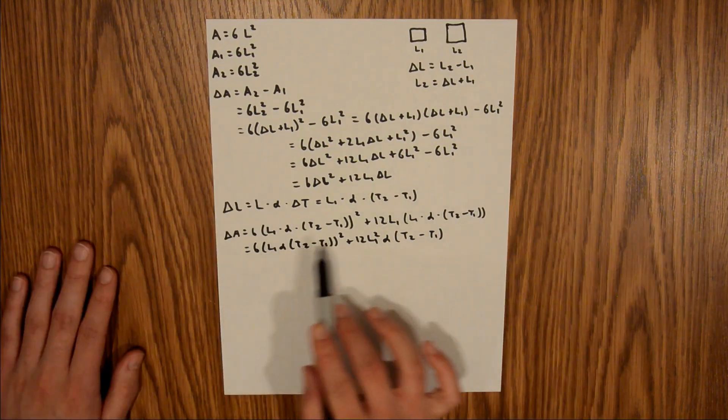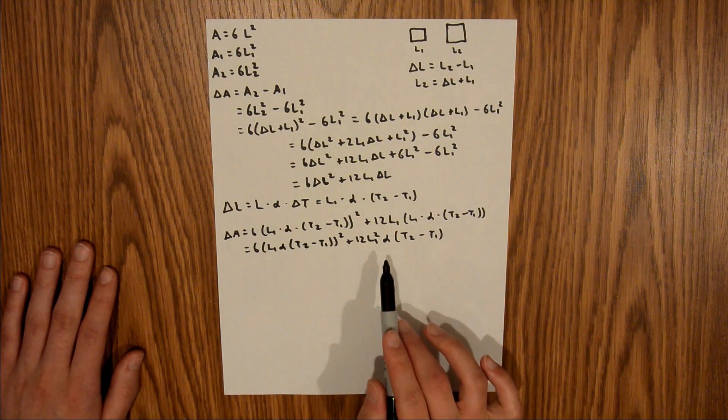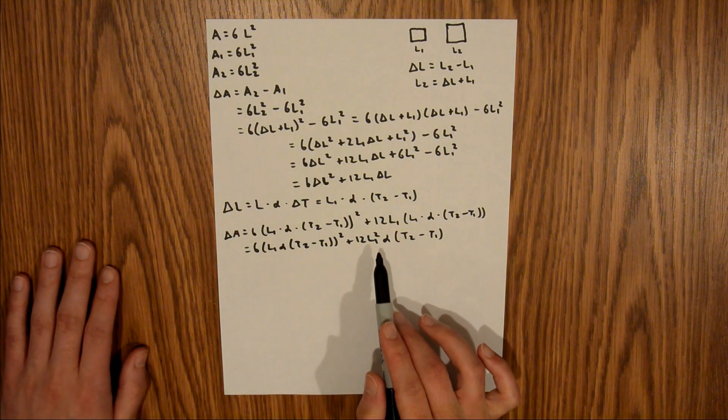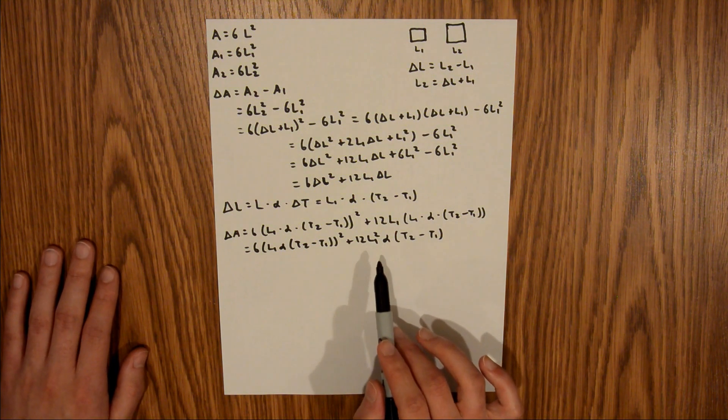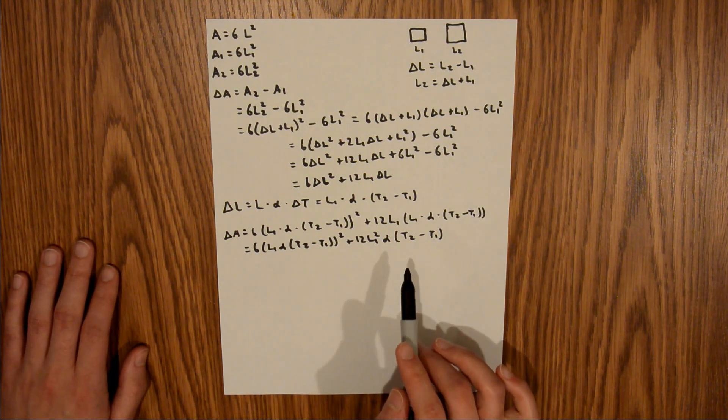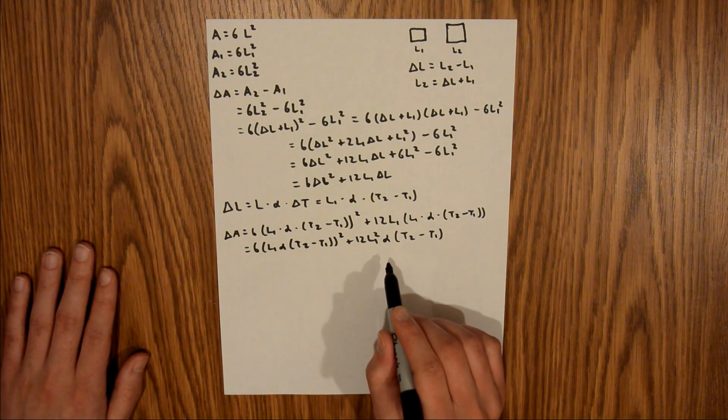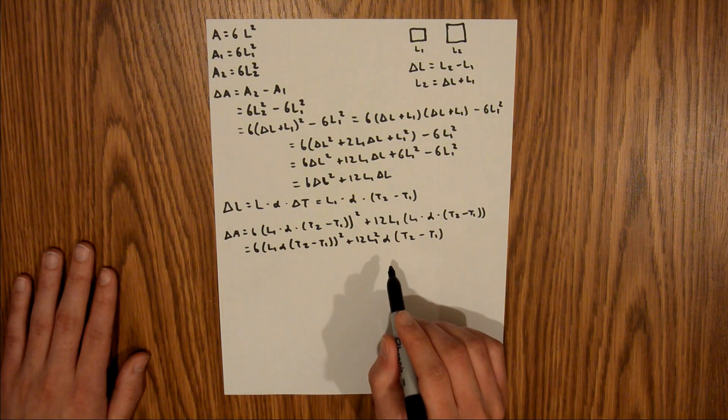So we are given all these values in the problem except for alpha. And I said alpha is the coefficient of linear expansion, which is a function of the material. The material that we are given in this problem is brass, and you can find an alpha for brass in one of the tables in the chapter.